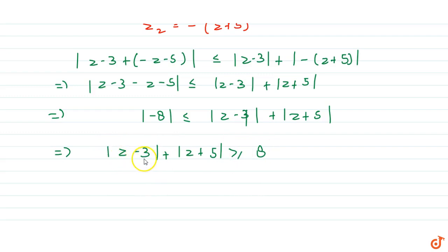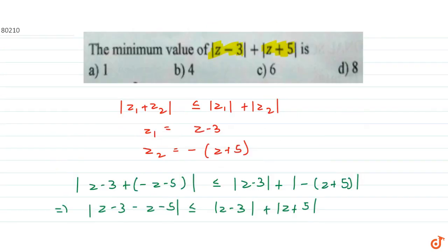So, minimum value for mod of z minus 3 plus mod of z plus 5 is 8. 8 is the answer of this question. Now, look at the options. So, option D is the correct option.